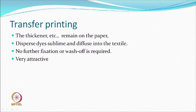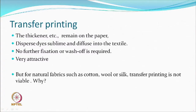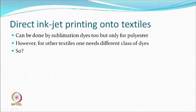From the inkjet point of view, transfer printing was a clean technology — the thickener was on the paper, nothing to do with the fabric; the disperse dye would sublime and diffuse into textiles, no further fixation or wash-off was required, so very attractive. However, the cost of the paper and what to do with it after use was an issue. Another issue is that for natural fibre fabrics such as cotton, wool, and silk, transfer printing was not viable; wet transfer printing was considered but has not been commercially successful. Direct inkjet printing on textiles can also be done by sublimation dyes, but again only on polyester.